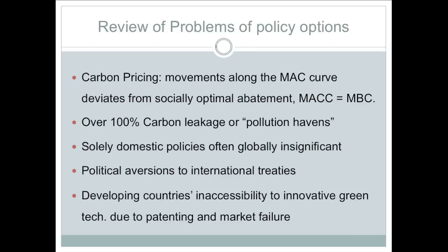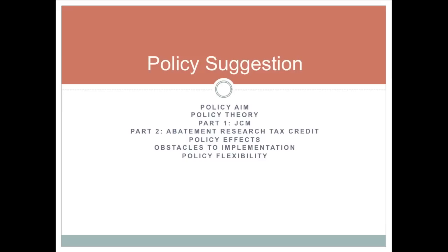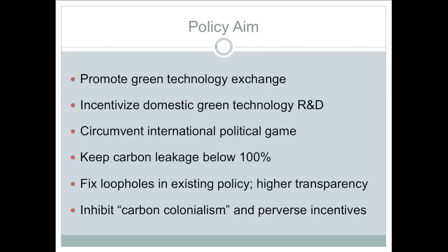Now we will summarize the major issues associated with these policies. First, the price rises of the carbon tax and the trading scheme result in movements along the MAC curve, deviating from socially optimal abatement levels where marginal abatement cost equals the marginal benefit curve. Second, carbon leakage or pollution havens result from differences in climate change policy among countries. Third, domestic policies are often insignificant in affecting the world's climate change issue without more countries committing to binding targets. Fourth, there are political aversions to international treaties, especially Senate Resolution 98 and the free rider issues. Fifth, developing countries lack inaccessibility to innovative green technology. With these problems, our policy aims to promote green technology exchange, incentivize domestic green technology R&D, circumvent international political barriers, keep carbon leakage below 100%, fix loopholes in existing policy for higher transparency, and inhibit carbon colonialism and perverse incentives.